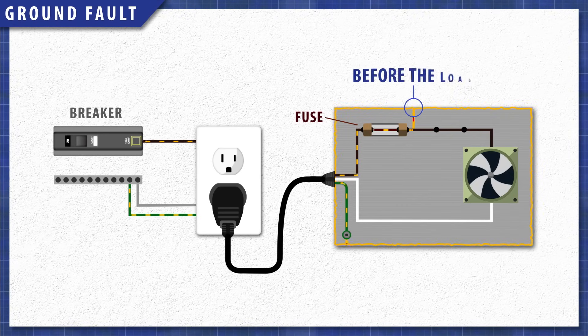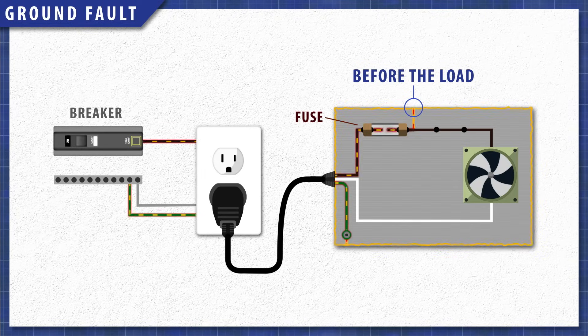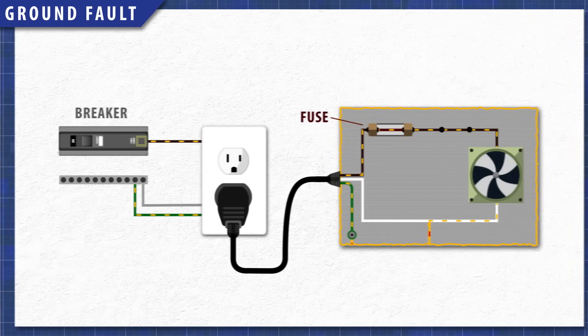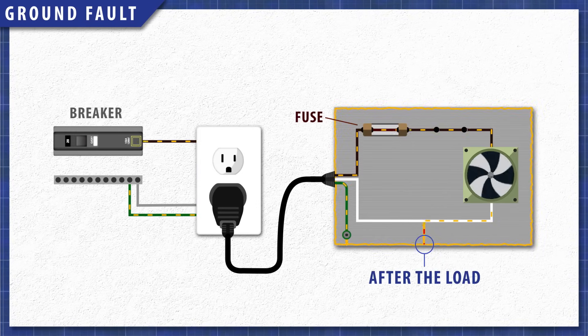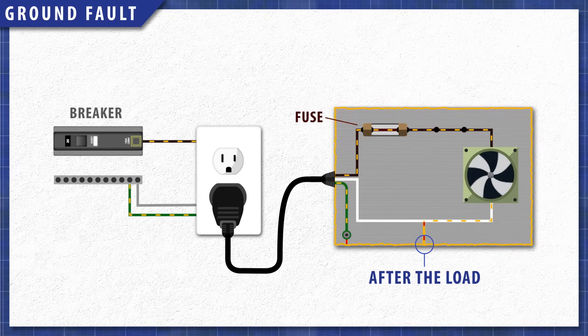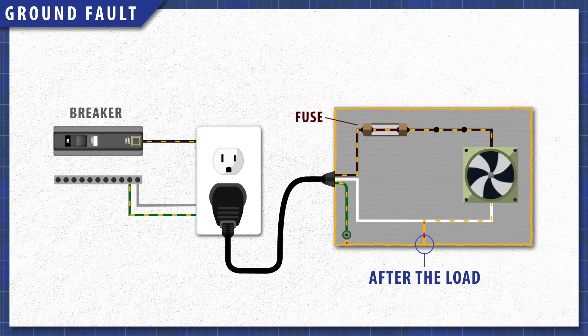If the ground fault happens before the load, the circuit is shorted, the current increases, and the breaker or fuse will blow, cutting power to the appliance. Now if the ground fault happens after the load, there is still resistance in the circuit, so the breaker might not trip. The appliance might still be functional, but this depends on the component affected.